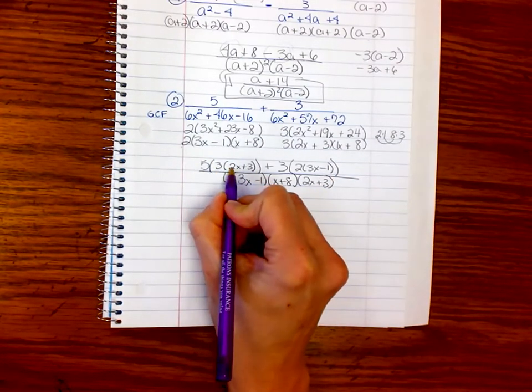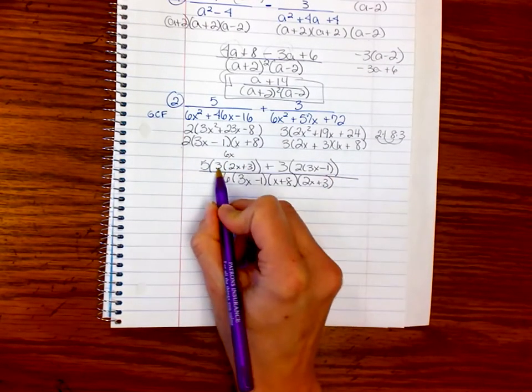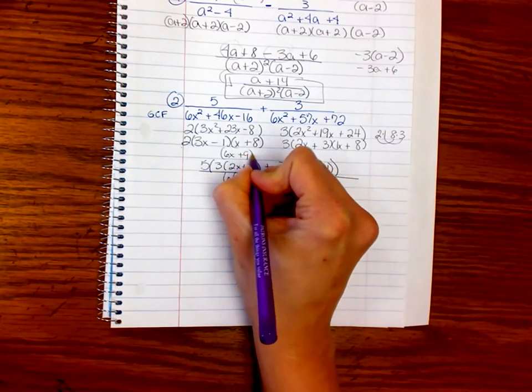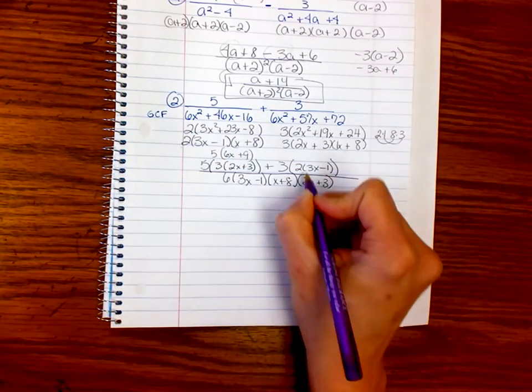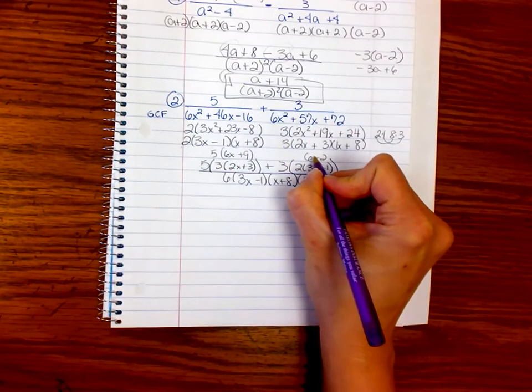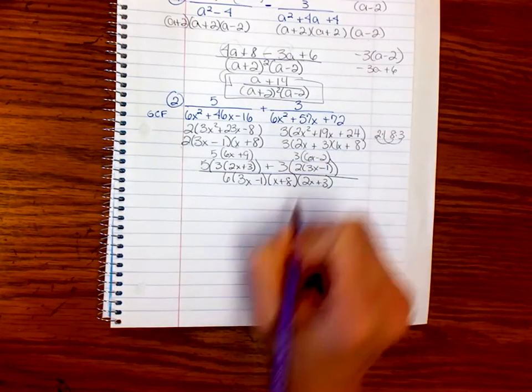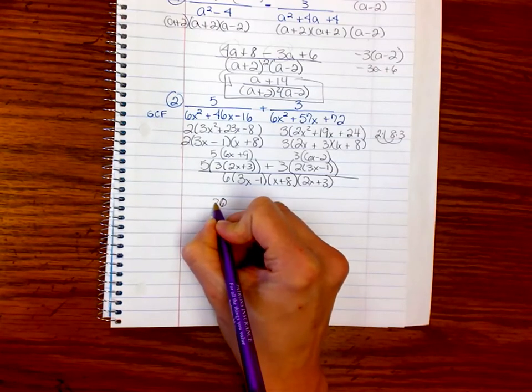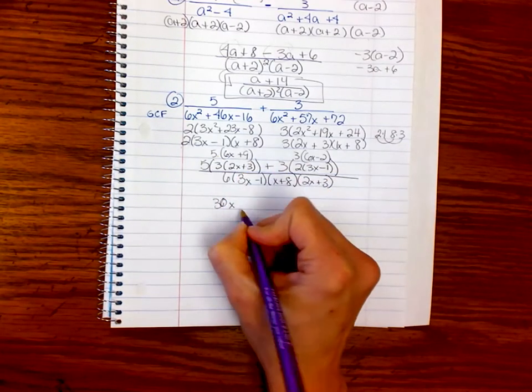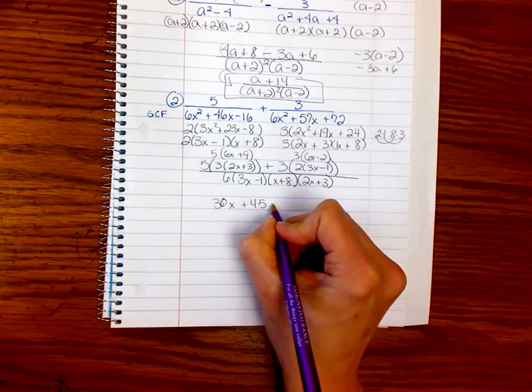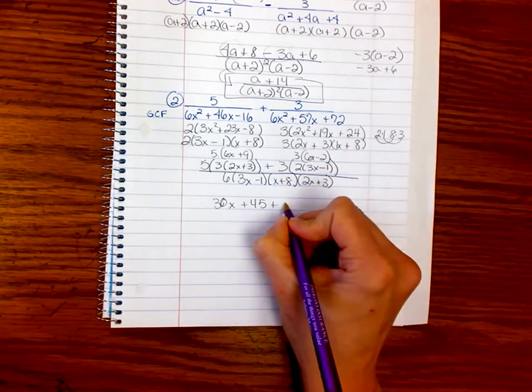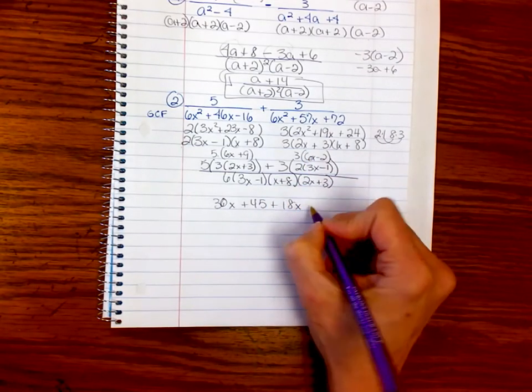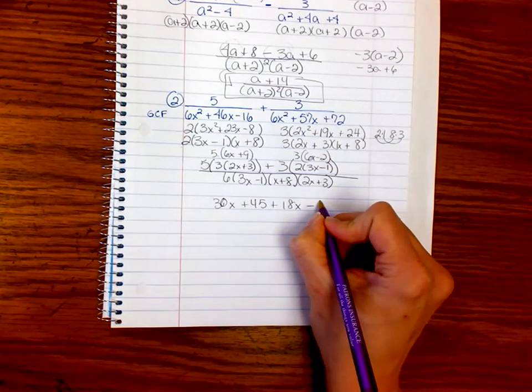Okay. So, let's simplify this. 3 times 2x is 6x. 3 times 3 is 9. That's going to have to be multiplied by 5. That's a 6x minus 2. And that's going to have to be multiplied by 3. So, down here, 5 times 6x is 30x. 5 times 9 is 45. Plus 3 times 6x. And 3 times 2 is 6.